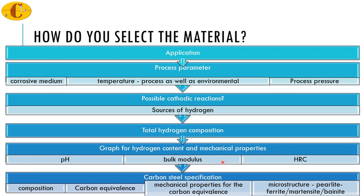Hence, the best way to choose between these mechanical properties is to see what is the most important property applicable in your case. That is why choosing or looking at the application is the most important step. Sometimes the qualification parameter may be HRC. Then the prudent way to look at the literature would be to go for that which will give you the plot between hydrogen content and hardness — that particular literature may not have the plot between hydrogen content and bulk modulus all the time. Hence, please select which critical parameter you need to monitor with respect to the total hydrogen composition, or what is the critical parameter that will define the selection of your material.